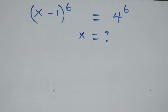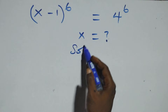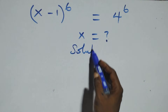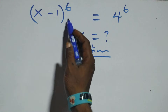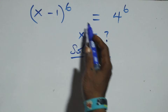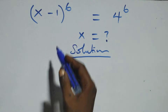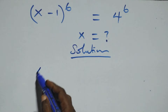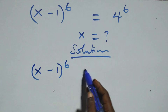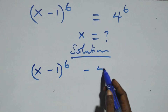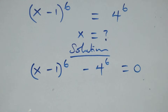Hello, you are welcome. How to solve this nice exponential equation. What we have here is (x minus 1) raised to power 6 equals to 4 raised to power 6. We take 4 raised to power 6 to the left hand side, so we have (x minus 1) raised to power 6 minus 4 raised to power 6 equals to 0.